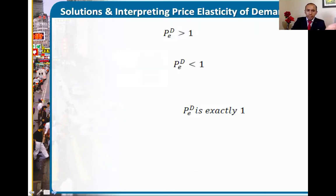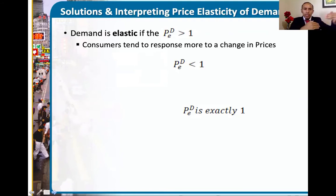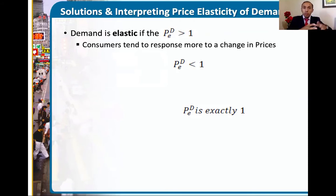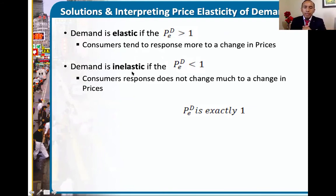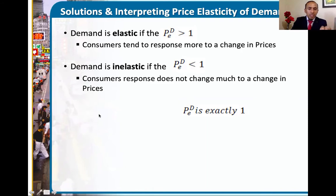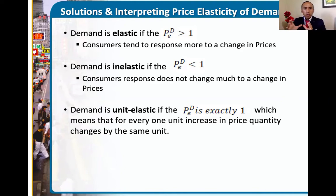The possible solutions of elasticity include: if demand is elastic, the price elasticity of demand is greater than 1 — consumers tend to respond a lot more to a change in price, either consuming more or less. When demand is inelastic, not as responsive, the price elasticity of demand is less than 1 — consumer response does not change as much, and they still buy close to the same amount even if the price has changed. When price elasticity of demand is exactly 1, we have unit elastic — for every 1% increase in price, the percent change in quantity changes by the same unit. This is more of a neutral response.